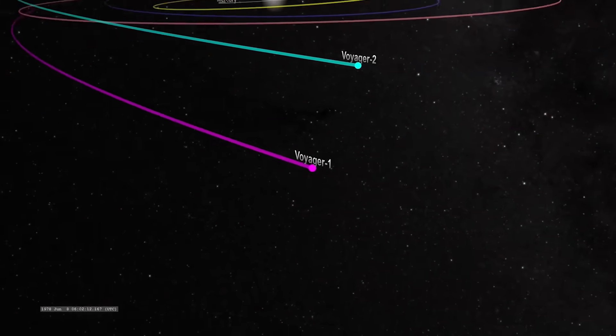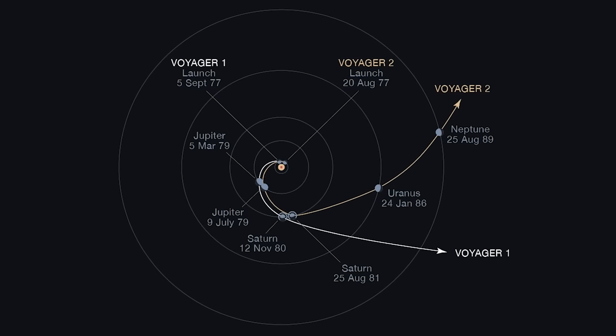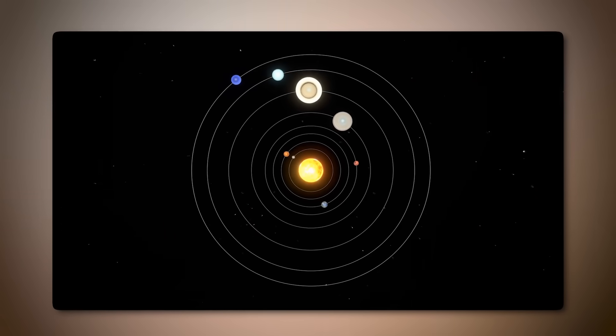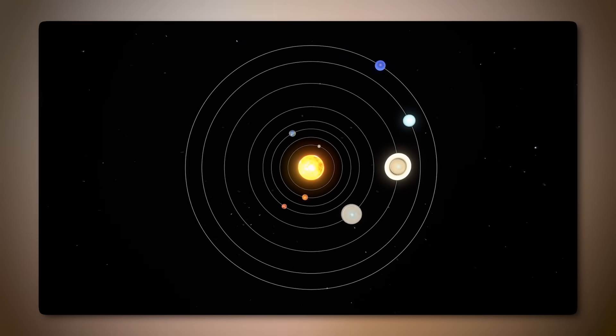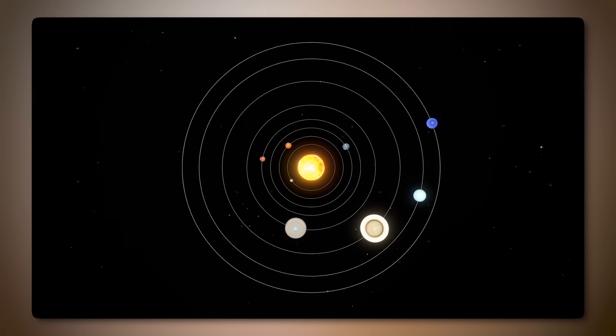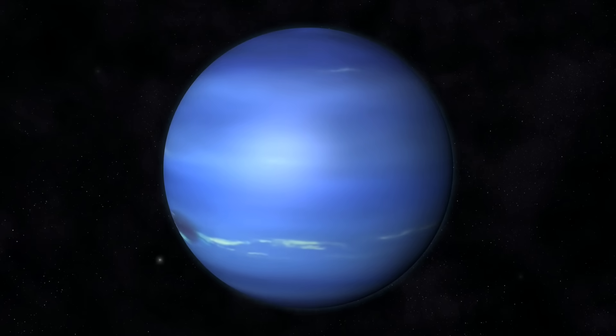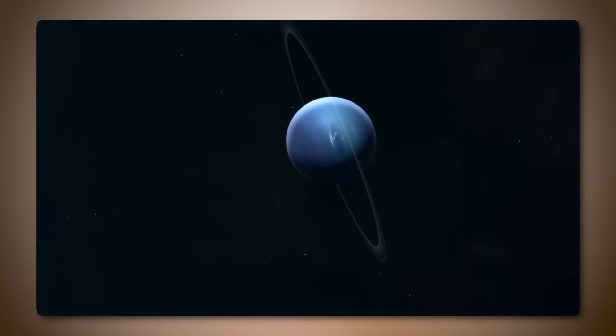Voyager 2's encounter with Neptune in 1989 uncovered a massive storm system known as the Great Dark Spot, similar to Jupiter's Great Red Spot. This storm, nearly the size of Earth, exhibited winds exceeding 1,500 miles per hour, the strongest observed in the solar system. The spot was transient, disappearing when Hubble later observed Neptune, suggesting that Neptune's atmosphere undergoes rapid and extreme weather changes.